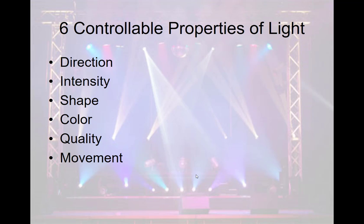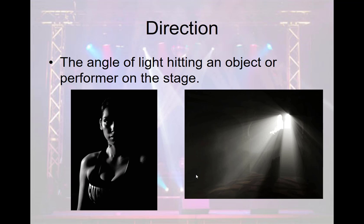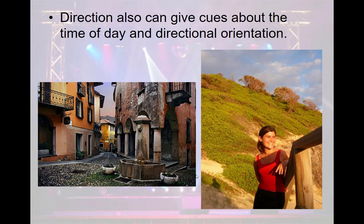There are six controllable properties of light to make these things happen: direction, intensity, shape, color, quality, and movement. Direction is the angle of light hitting an object or performer on stage. These properties have their own semiotic information and also tell part of the emotional landscape of a play. Direction can also give us clues about time of day and directional orientation.